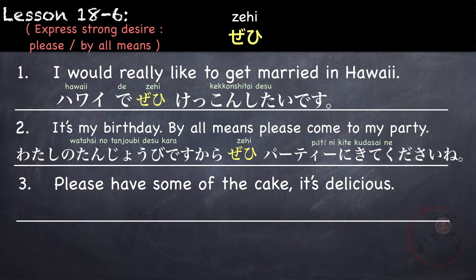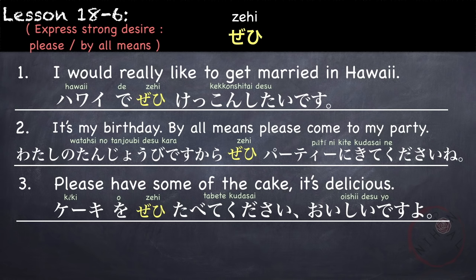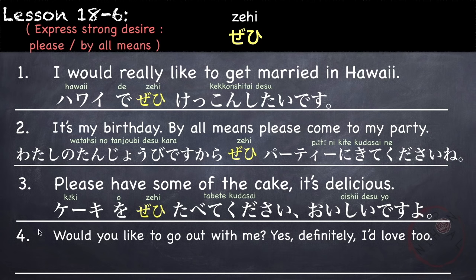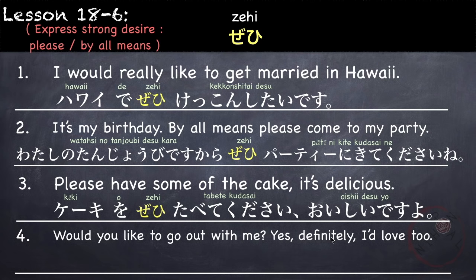Another use is when you want to ask someone to try something, or offer something: please have some of the cake, it's delicious — keeki wo zehi tabete kudasai, oishii desu yo. Or you can put zehi in front: zehi keeki wo tabete kudasai, oishii desu yo. Lastly, you can use zehi as an enthusiastic reply. If someone asks isho ni asobi ni ikimasen ka — would you like to go out with me — you can say: ee, zehi! — yes, definitely, I'd love to!